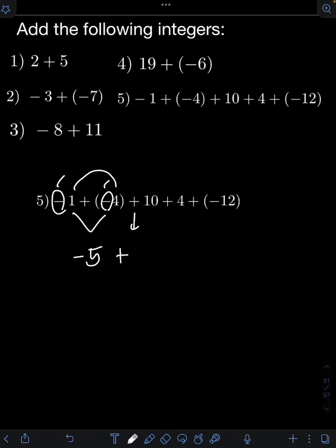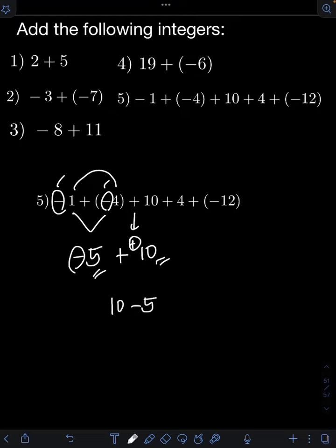Next, we need to add 10. So this time we are adding unlike signs — one negative and one positive. So if that's the case, we subtract the smaller absolute value, which is 5, from the bigger, which is 10. So we will have 10 minus 5, or 5. But we must follow the sign of the number with the bigger absolute value, which is positive 10. So this should be positive 5, or simply 5.